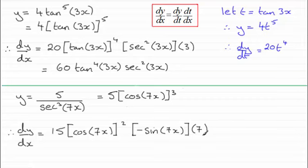OK. So that's just doing it straight off. Just to recap, what I did there was I let t equal the cosine of 7x.